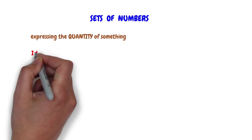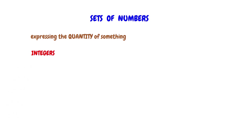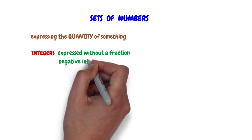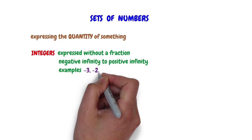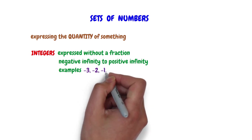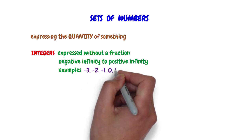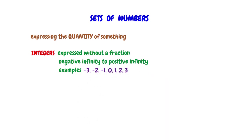The first set is the integers. Integers are numbers expressed without a fraction. They run from negative infinity to positive infinity. Examples of integers include negative 3, negative 2, negative 1, 0, 1, 2, and 3. All these numbers are expressed without a fraction.